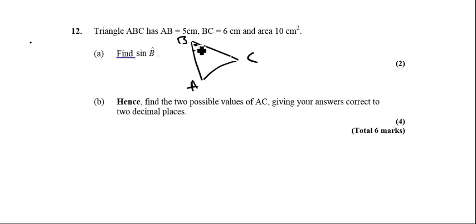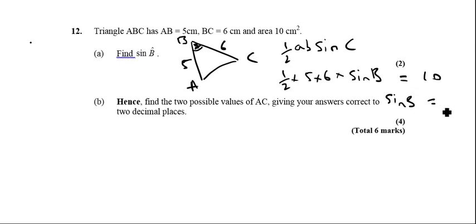We're trying to find this angle here. We've got that is 5, we've got that as 6. Using the general formula for the area of a triangle, which is a half AB sine C, where A and B are the two accompanying sides either side of the angle in the middle. So in this particular case, we're going to get a half times 5 times 6 times sine of angle B, and this is equal to 10. So all we need to do is rearrange that and we'll end up with sine B is equal to 2 thirds.